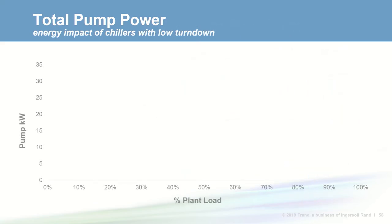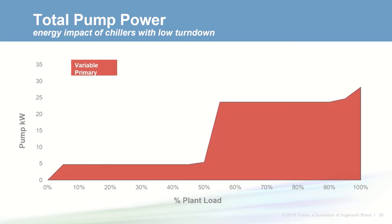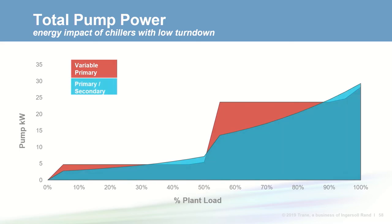Looking at total pumping power based on plant load: for variable primary flow, there are two large plateaus of pumping power due to the high minimum flow — as building load decreases from 90 to 55 percent and from 45 to 5 percent, the system must bypass flow to maintain minimum chiller flow. The primary secondary configuration shows the impact of being able to reduce distribution pump GPM to match building load. The variable primary variable secondary configuration follows the same trend as primary secondary but further reduces primary GPM to save slightly more pump KW. Because of poor chiller turndown, there are numerous plant loads where a variable primary flow configuration will cost more energy.